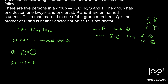Q is neither doctor nor artist. Since P and S are unmarried students, the rest of the group — Q, R and T — should have a doctor, lawyer and artist among them. Since Q is neither doctor nor artist, Q has to be the lawyer. We got Q as lawyer. And it is given R is not a doctor. Q is already the lawyer, so only two professions are left: doctor and artist. R is not a doctor, so R is an artist.